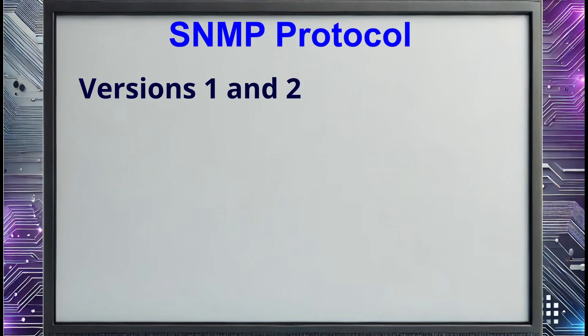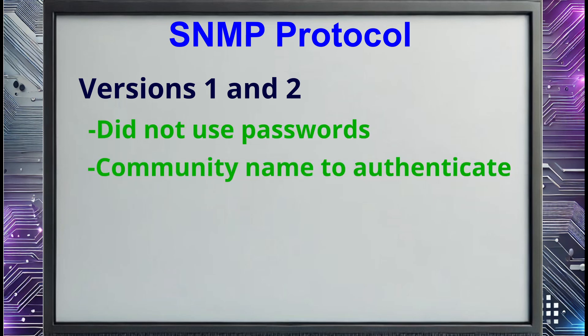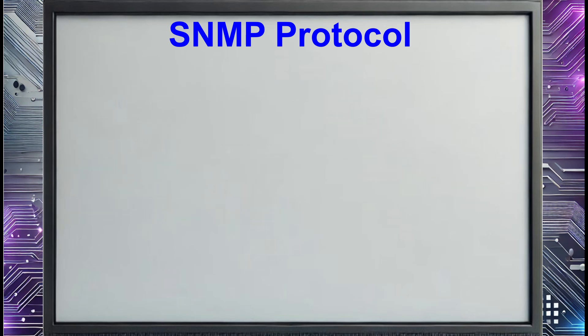It's important that you understand that older versions of the SNMP protocol were notoriously insecure. Versions 1 and 2 didn't use passwords. Instead, agents used a community name to authenticate to the manager, implementing a rudimentary form of access control. Unfortunately, most people used the default community names of 'public' for read-only access and 'private' for read-write access. Even if they used a more complex community name, the earlier versions of SNMP sent it in clear text over the network, making it easy for a bad actor to sniff the community name and manipulate information transmitted between the manager and the agents.